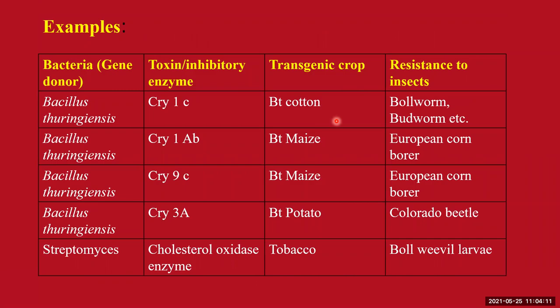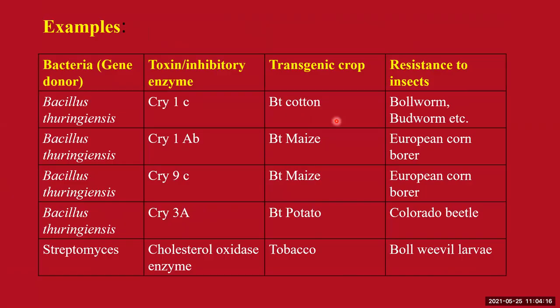In summary, the gene inserted inside the transgenic plant produces a toxic protein or enzyme that helps the plant kill insect pests. That covers fungal biopesticides, viral biopesticides, herbal biopesticides, and transgenic plants that serve as biopesticides — completing our discussion on biopesticides.